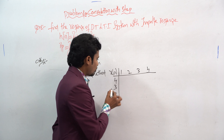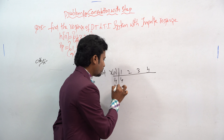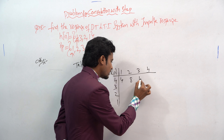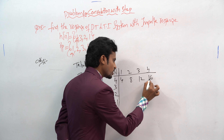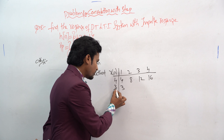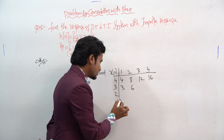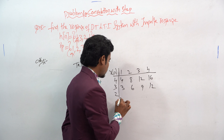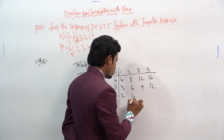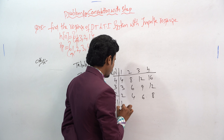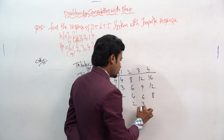First step for the tabular method: you have to multiply. Here 4×1=4, 4×2=8, 4×3=12, 4×4=16. Next row: 3×1=3, 3×2=6, 3×3=9, 3×4=12. Then 2×1=2, 2×2=4, 2×3=6, 2×4=8. And finally 1×1=1, 1×2=2, 1×3=3, 1×4=4.